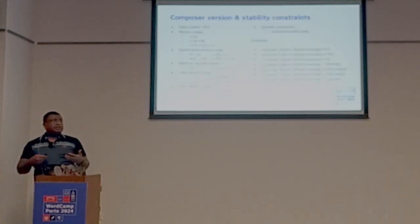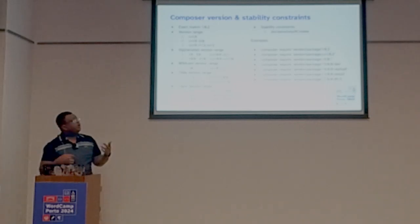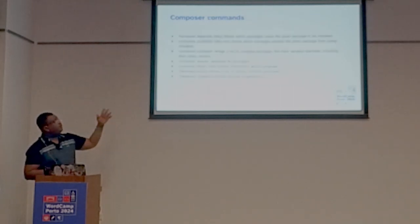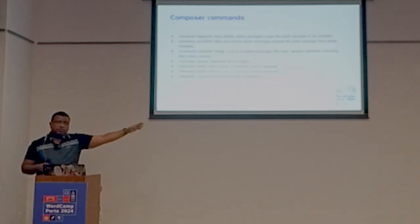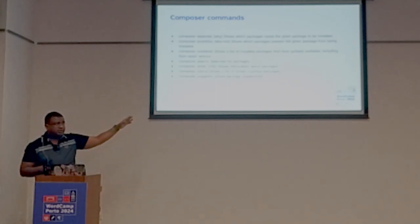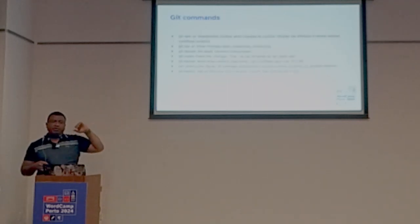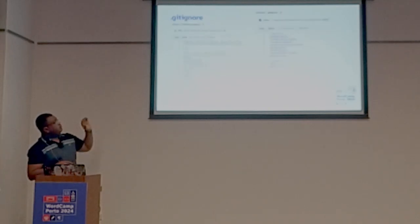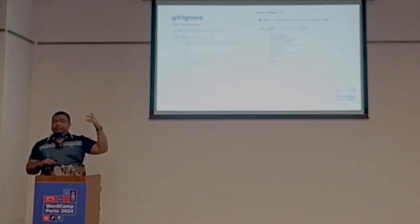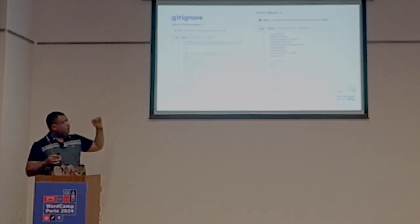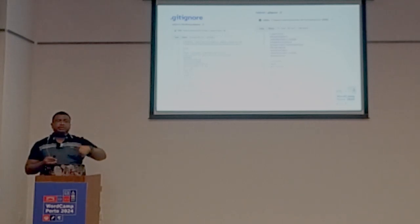You also need to understand versioning, semantic versioning, and stability tags — that alone could be a whole session, so this is just a reference. The slides are available so you can look at them later. Here are some common Composer commands and Git commands I use on a regular basis, along with gitignore file examples you can use as a reference. Again, I do not intend to give you the definitive solution — look at examples and question why they are ignoring or including specific things.